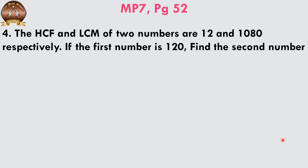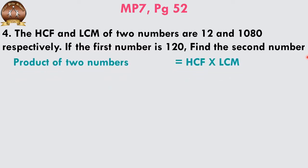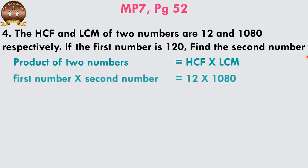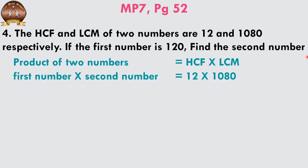The HCF and LCM of two numbers are 12 and 1080 respectively. If the first number is 120, find the second number. We know that the product of two numbers equals HCF multiplied by LCM. So, number 1 multiplied by number 2 gives us HCF into LCM. The first number multiplied by the second number equals 12 multiplied by 1080.